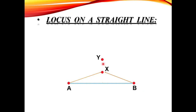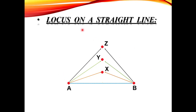इसके अलावा मैं एक और Point लेता हूँ — Y — यह भी बिल्कुल Middle पर है, तो इसका Distance A से और B से बराबर है। एक तीसरा Point Z भी ऐसे Place किया है कि इसका फासला Fixed Point A से और Fixed Point B से बराबर है। तो यह तीनों Points X, Y & Z — इनका जो Set है — इसे हम Locus कहते हैं, क्योंकि यह सारे Points दो Fixed Points A और B से Equal Distance पर हैं।